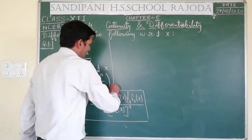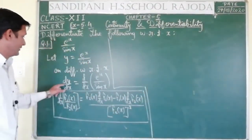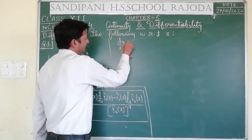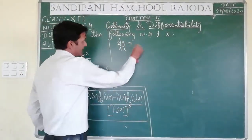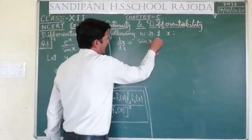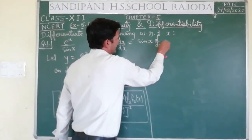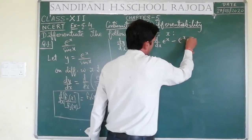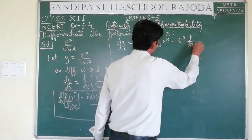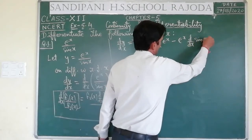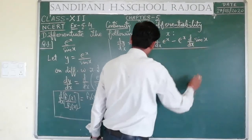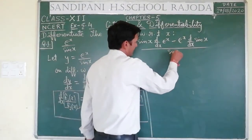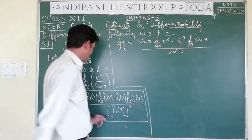इसको आगे solve करेंगे। dy/dx = [sin x · d/dx(e^x) - e^x · d/dx(sin x)] / sin²x. Denominator हमारा sin x, d/dx of numerator e^x, minus numerator e^x, d/dx of denominator sin x, upon denominator square sin²x.